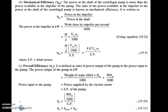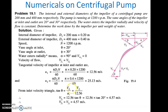Let us see some numericals based on the centrifugal pump. There is definitely one numerical coming for 10 to 12 marks in the exam for centrifugal pump. The numericals are very simple and only one velocity diagram you have to remember for solving all numericals on the centrifugal pump. This is the velocity diagram which you have to remember for any type of centrifugal pump. The inlet velocity triangle for a centrifugal pump was the outlet velocity triangle for the Francis turbine.